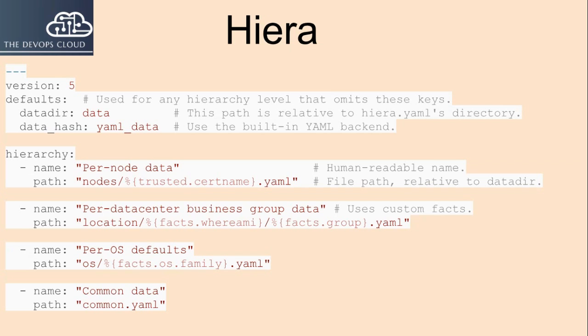The hierarchy key is an array of hashes which configures the levels of the hierarchy. default_hierarchy is an array of hashes which sets a default hierarchy to be used only if the normal hierarchy entries do not result in a value. defaults is a hash which can set a default data_dir, backend, and options for hierarchy levels.